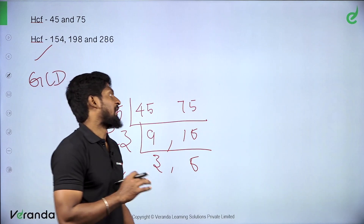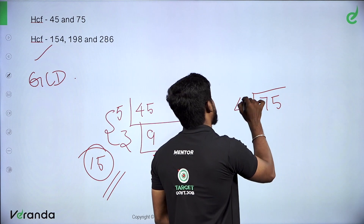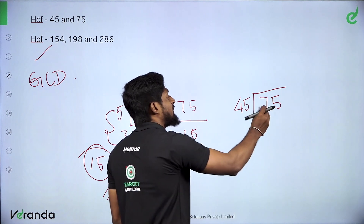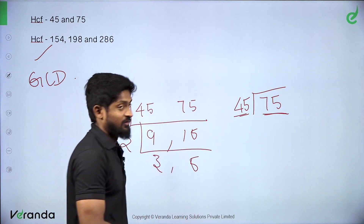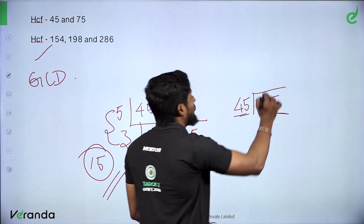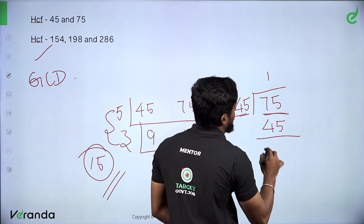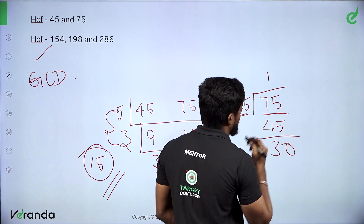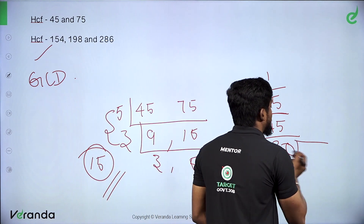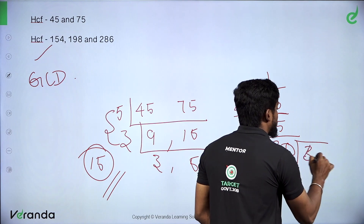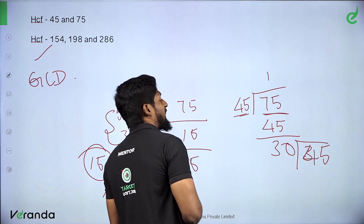So what do we do? We take 75 divided by 45. The larger number is 75 and we divide by 45. 45 goes into 75 once — that gives 45. The remainder in 75 is 30.